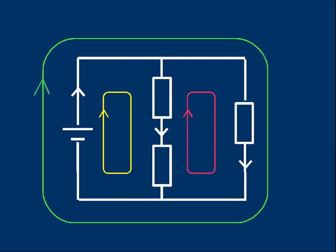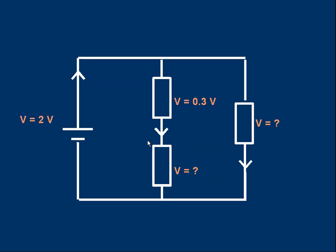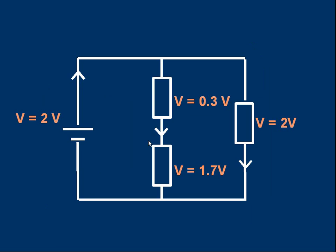Let's use the yellow loop and the green loop to work out the problem. Going around the yellow loop: the cell supplies two volts, which must equal the other voltages in the loop. We have 0.3 volts, so the lower resistor must have 1.7 volts, because 0.3 plus 1.7 equals 2. Going around the outer green loop: there's only one resistor, so the voltage across the cell — two volts — equals the voltage across that right-hand resistor. So the right-hand resistor has two volts across it, the same as the cell.